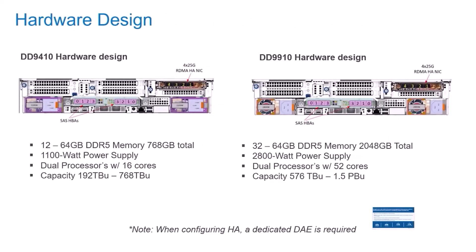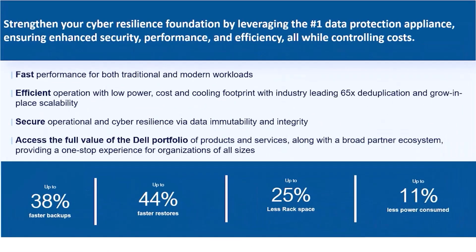Let's go over the hardware design for the next generation platform models DD-9410 and DD-9910. We can see details about the mid-tier DD-9410 controller and the enterprise-tier DD-9910 controller. There is no external disk array enclosure required to configure cache tier for stand-alone models. Being built on a 2U DELP with deep racks helps to reduce rack space usage by up to 25%. With dual processor 52 cores and 2048 GB memory, it achieves fast performance for both traditional and modern workloads. The hardware design delivers up to 38% faster backups, 44% faster restores, 25% less rack space, and up to 11% less power consumption.